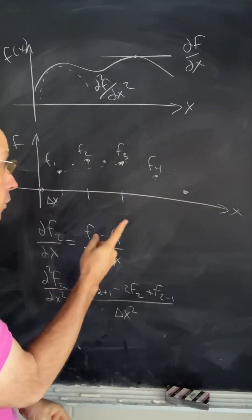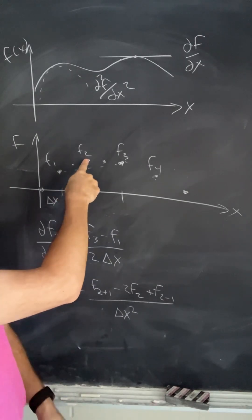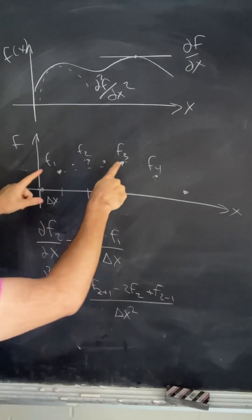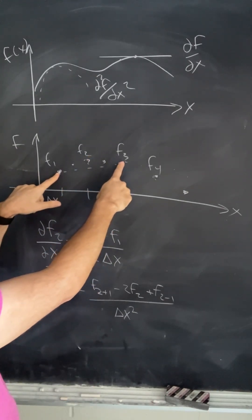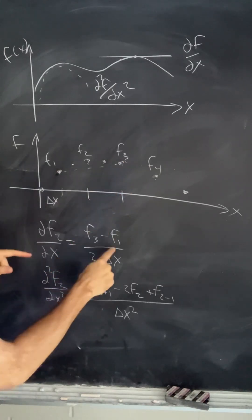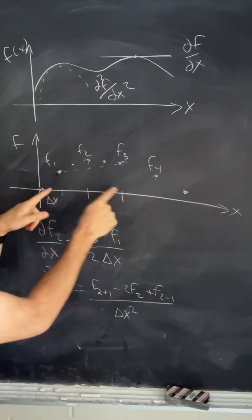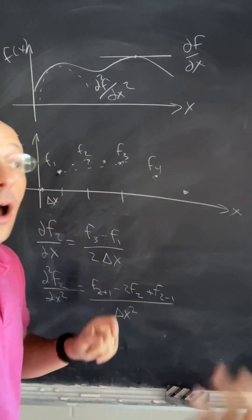For the first derivative, I can take the first derivative at the point f2 by just finding the slope between these two points. It would just be f3 minus f1 over two delta x, since I have two of these intervals delta x.